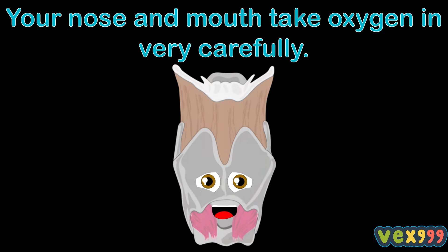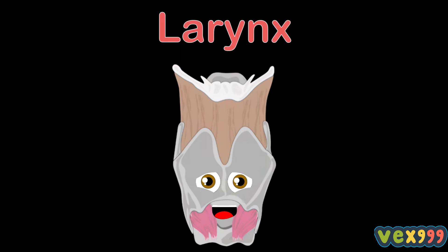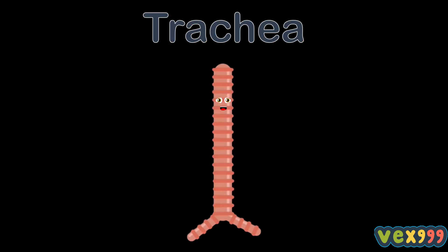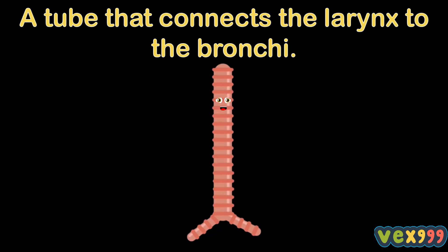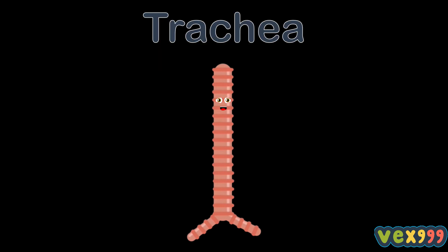The pharynx takes in outside air from the nose and mouth. I'm the trachea, and I am a tube that connects the larynx to the bronchi inside you. I take in the air that you breathe, and it passes down the tubular shape inside of me.